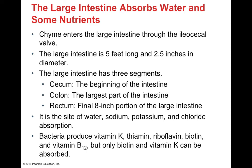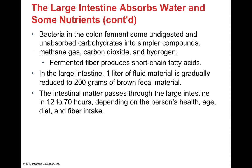Bacteria in the large intestines produce vitamin K, riboflavin, and biotin, though only biotin and vitamin K are actually absorbed. Bacteria also perform fermentation of undigested carbohydrates, releasing methane gas, carbon dioxide, and hydrogen — which is why we off-gas during digestion. When fiber ferments, it produces short-chain fatty acids. In the large intestines, approximately one liter of fluid is reduced to about 200 grams of fecal material. Transit time through the large intestines ranges from 12 to 70 hours depending on health, age, diet, and fiber intake.